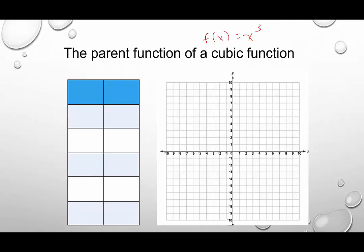So if we look at f of x equals x cubed, let's first start with a table of values because we can always use a table of values to help us. We're going to go really generic here. We're going to use negative 2, negative 1, 0, 1, and 2.